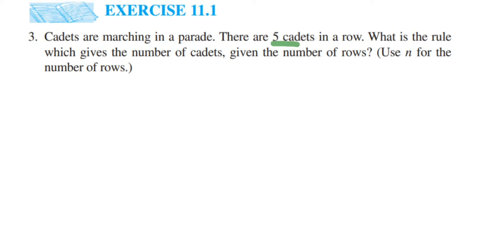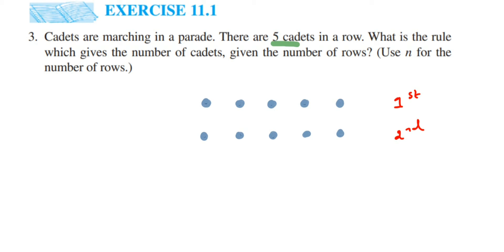In one row there are five cadets — one, two, three, four, five. This is my first row. Now suppose there's a second row; in the second row again there will be five, because in each row there are five cadets. So in the second row we have one, two, three, four, five. And in the third row we again have five cadets. So total cadets are five plus five plus five, which is fifteen. For up to the second row there are ten — each time one more row is added, five more cadets are added.